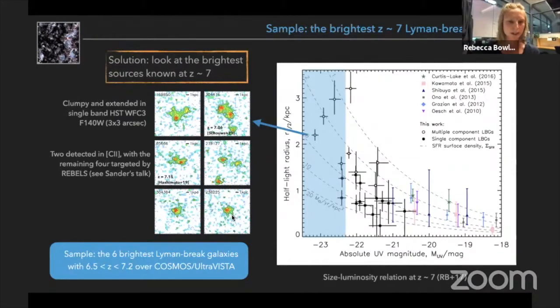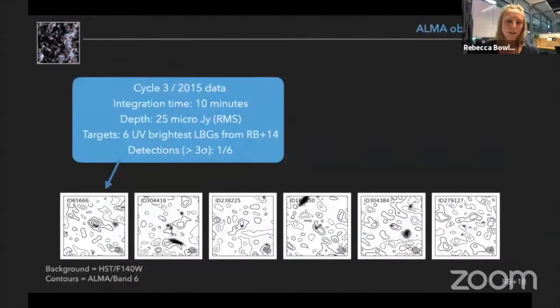A couple of these are spectroscopically confirmed in the literature and the other four are targeted by REBELS, so this is a little prequel to Sander's talk coming up later today. So these are the six galaxies that I'm proposing for follow-up with ALMA.